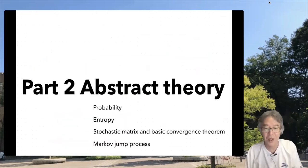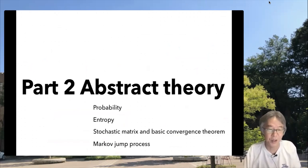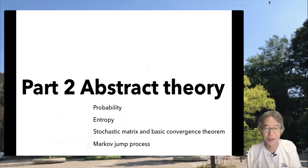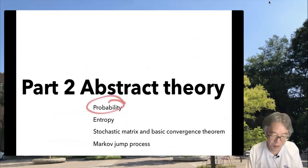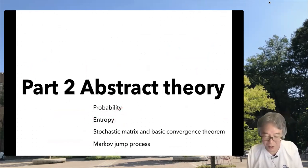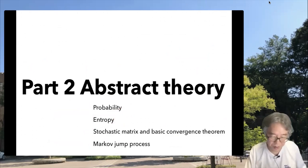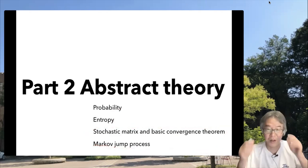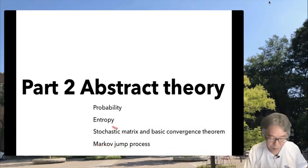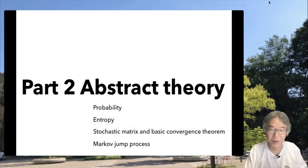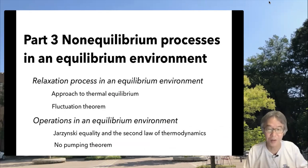Part 2 covers almost all necessary mathematical abstract theory. It starts with probability and entropy — these are easy — then develops the general theory of stochastic processes in an efficient way, finishing all the abstract theory before moving into non-equilibrium physics.